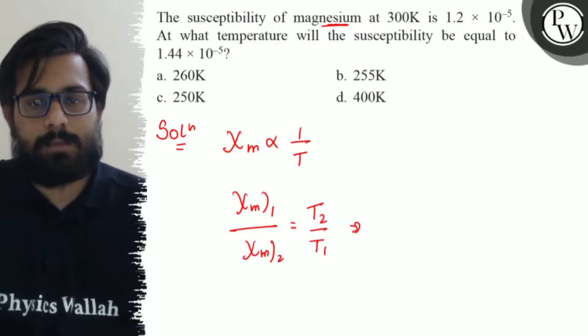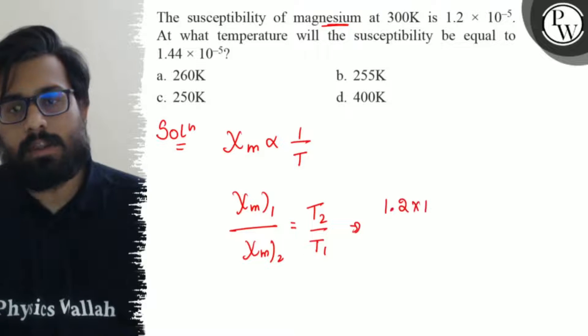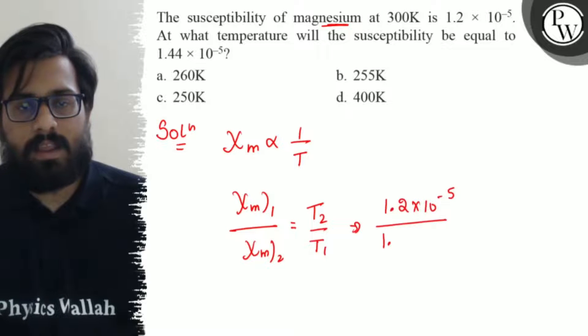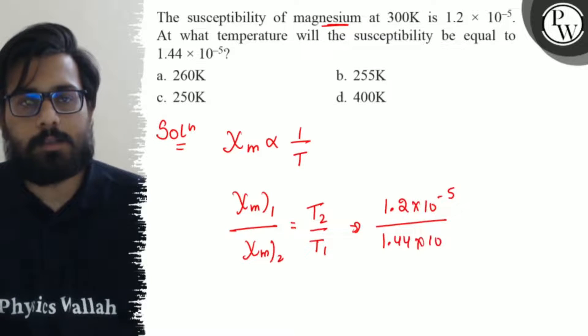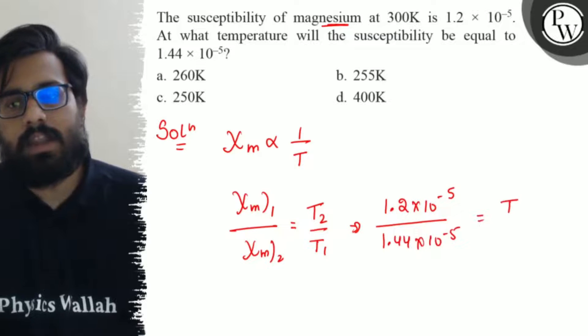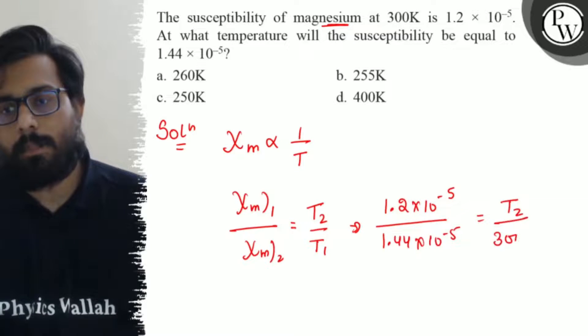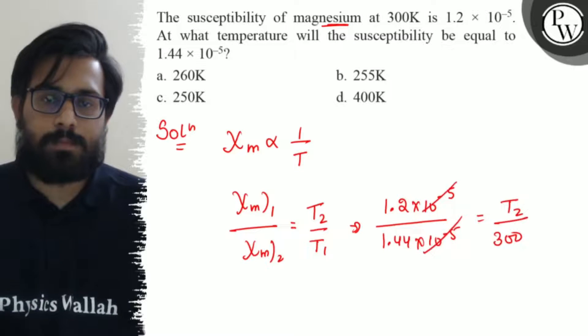In the first case, susceptibility is 1.2 × 10^(-5). In the second case, susceptibility of 1.44 × 10^(-5) is equal to T2 by 300. The 10^(-5) terms cancel out.